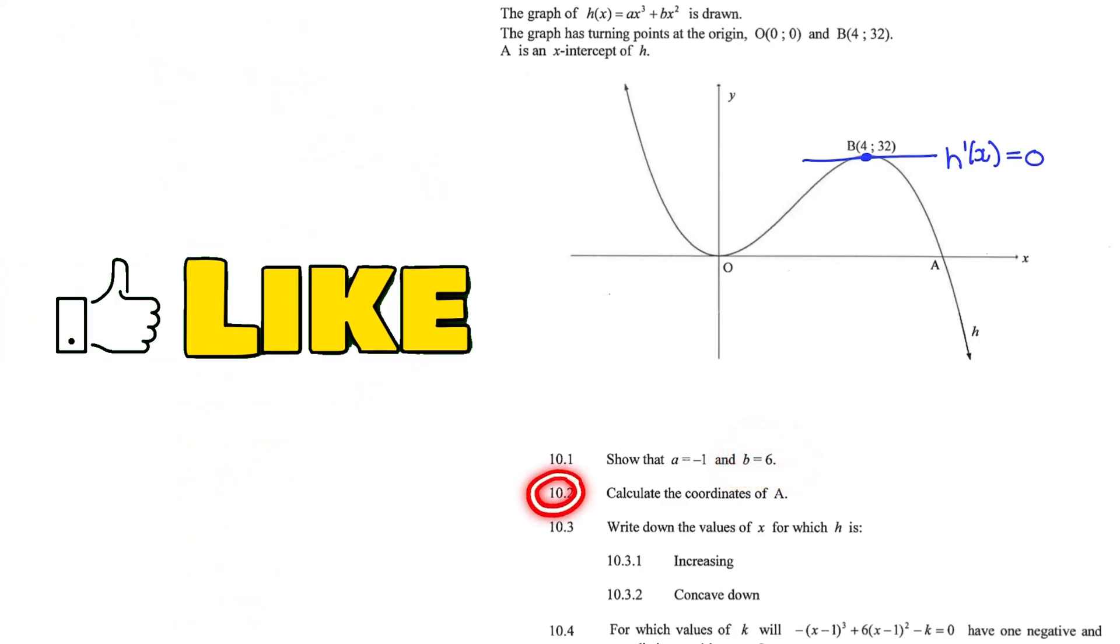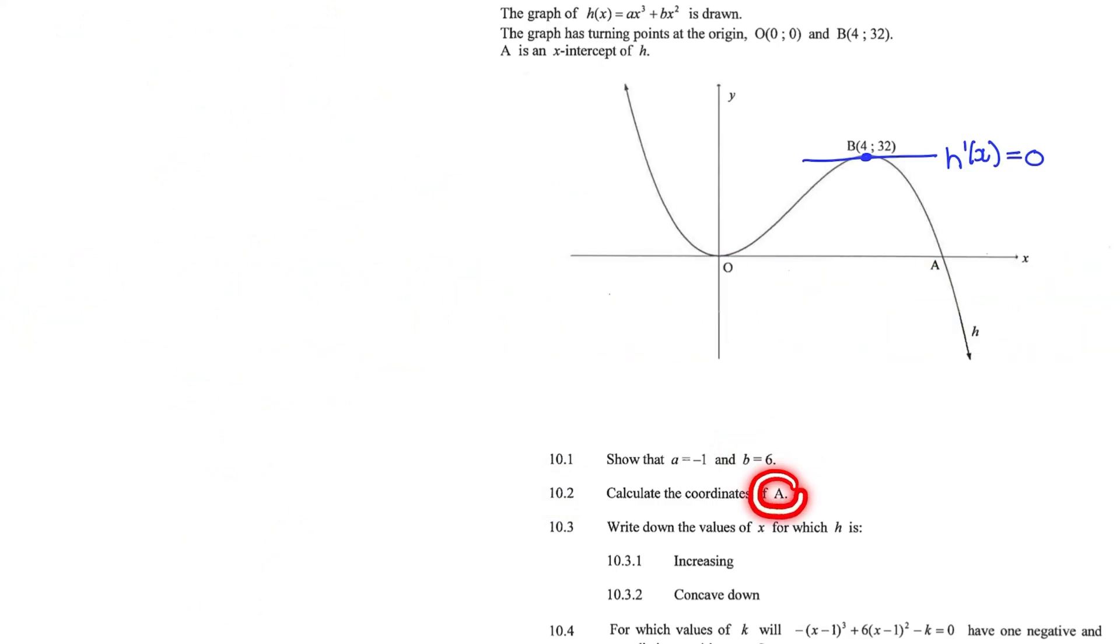10.2. Calculate the coordinates of A. So A is the x-intercept of the function. And we now know that H(x) equals negative x cubed plus 6x squared. So I find this equation by substituting A with negative 1 and B with 6 in the equation given. That allows me to find the x-intercept.